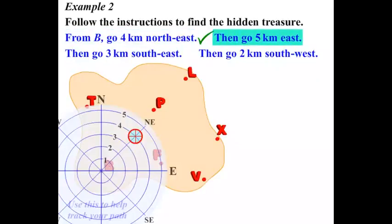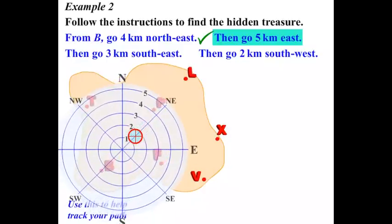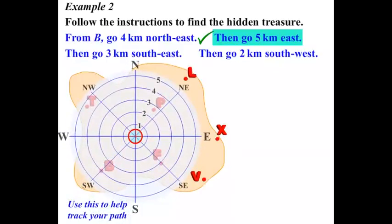Next step, go 5km East. So we move the compass right so it's right on the centre. And we need to go 5km East. There we have it. So that's our new position. Let's give that a tick.